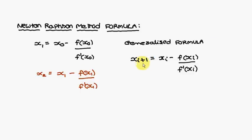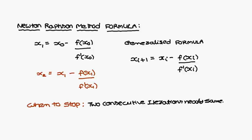The generalized formula follows this pattern: if you observe, when calculating x₁, you use x₀ in all terms. When calculating x₂, you use x₁ in all terms. This is how you remember the Newton-Raphson method formula.